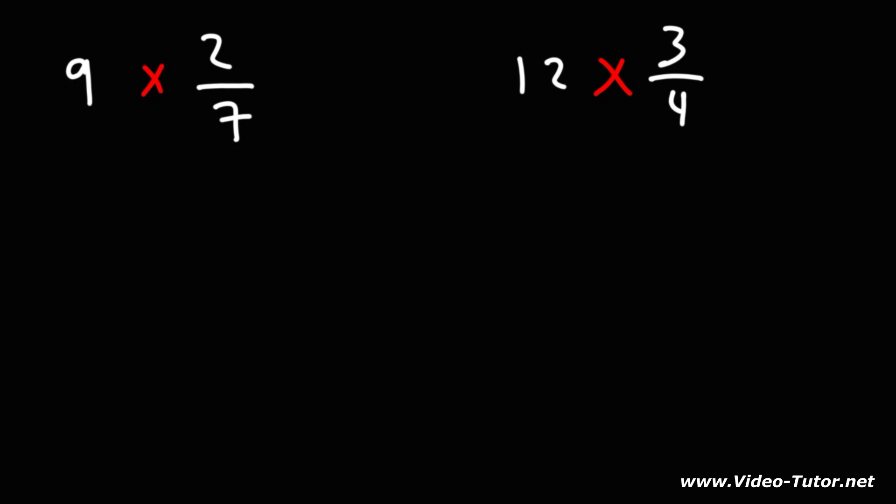So for the first example, we have 9 times 2 over 7. 9 is the same as 9 over 1, so you can write it this way, and then multiply across. So we have 9 times 2, which is 18. 7 times 1, that's 7.